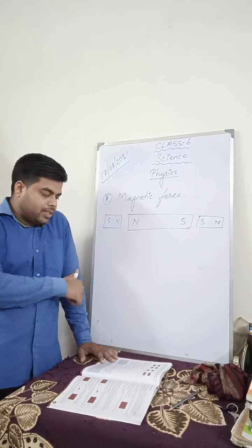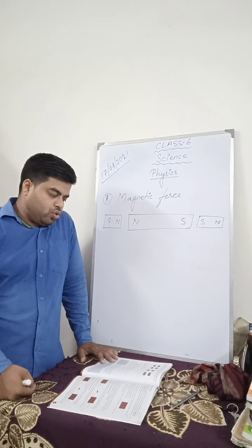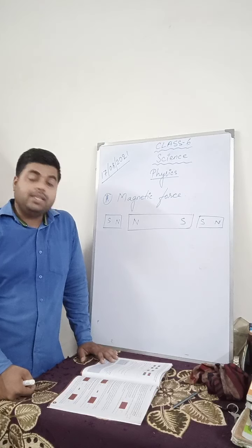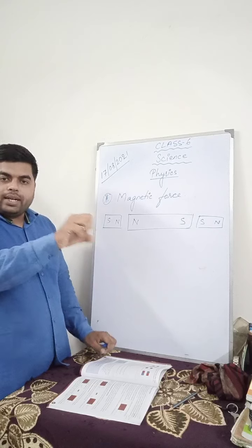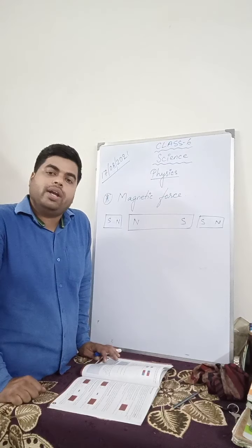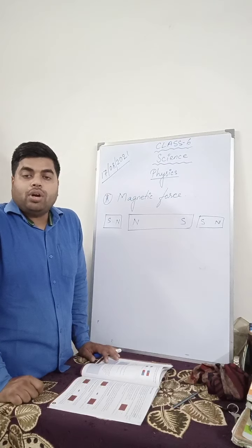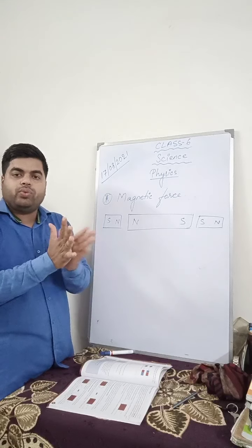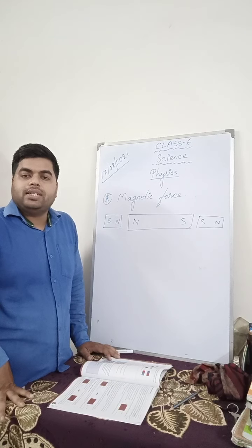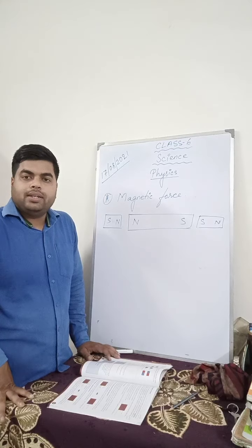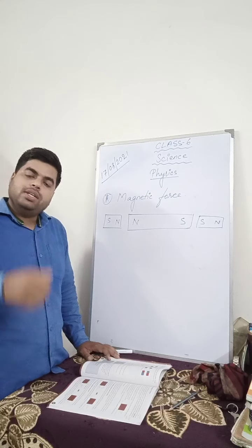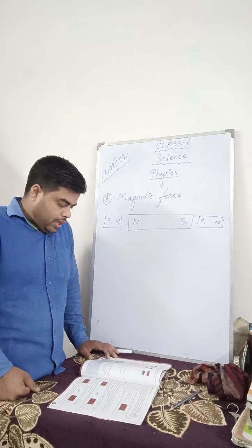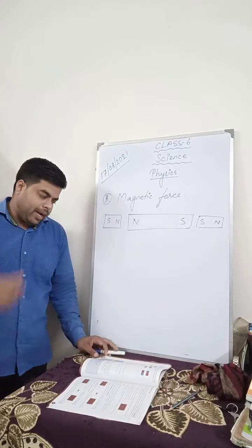North pole attracts south pole. Magnetic force between two magnets does not require any contact between the magnets, hence it is a non-contact force. For a magnet to attract any magnetic substance or another magnet, they do not have to be in touch with each other — they will act from a distance even with a gap between them.